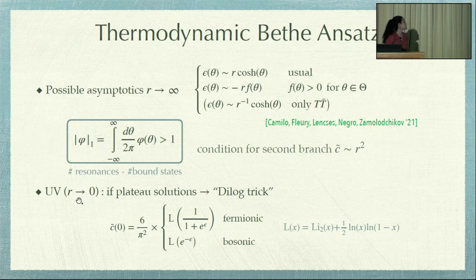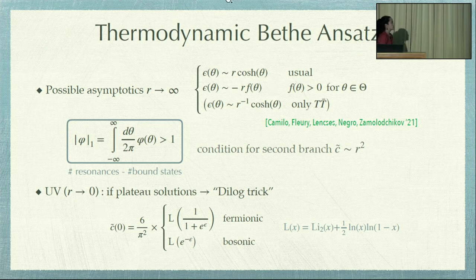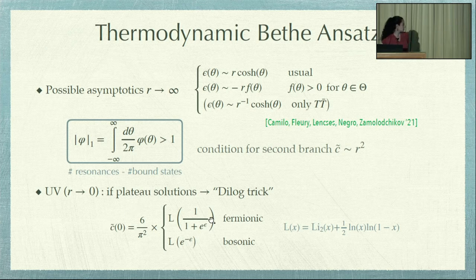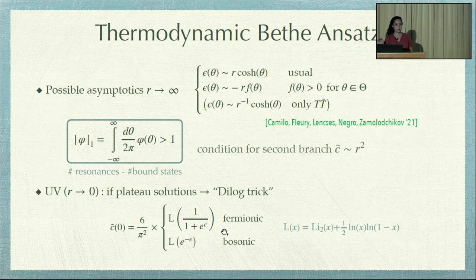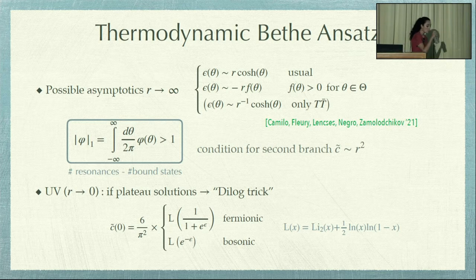The other thing I will use is that in the UV, when R goes to zero, if your solutions tend to some plateau — which is often the case — then one can use the so-called dilogarithm trick to compute the central charge. You would compute it in terms of the L-function, which involves the logarithm, in terms of the pseudo-energy at the constant value of the plateau.